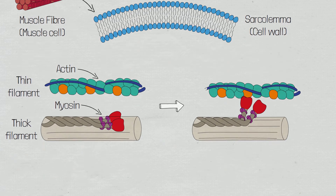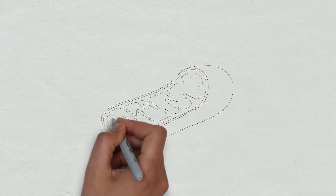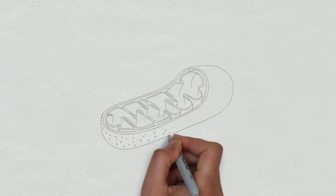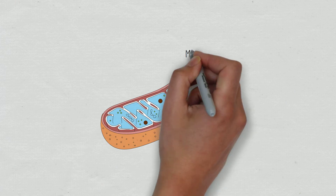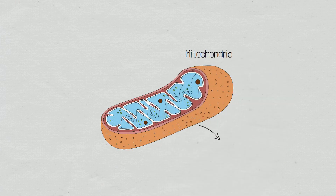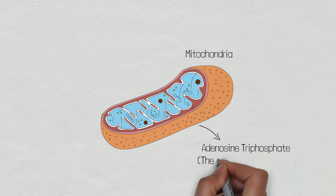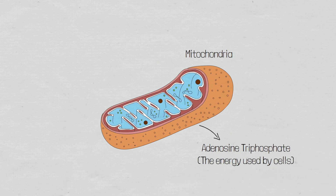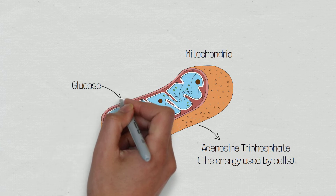Due to the high energy demands of skeletal muscle, there are high concentrations of mitochondria, which are responsible for creating adenosine triphosphate (ATP). ATP is what the cell uses for energy, and this is achieved by a complex cycle involving glucose and oxygen.